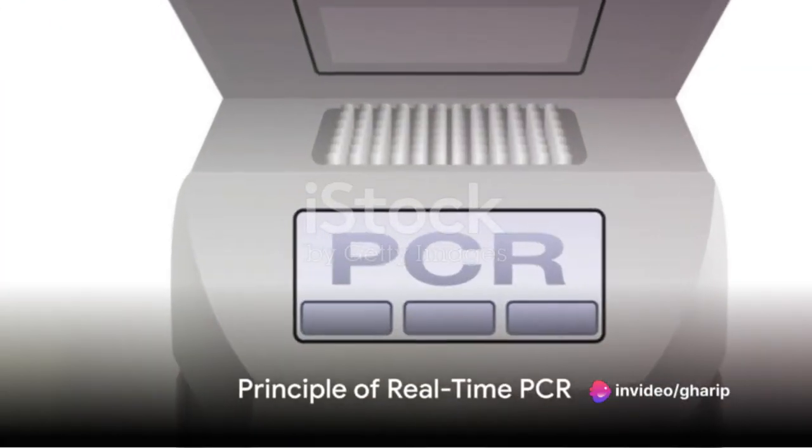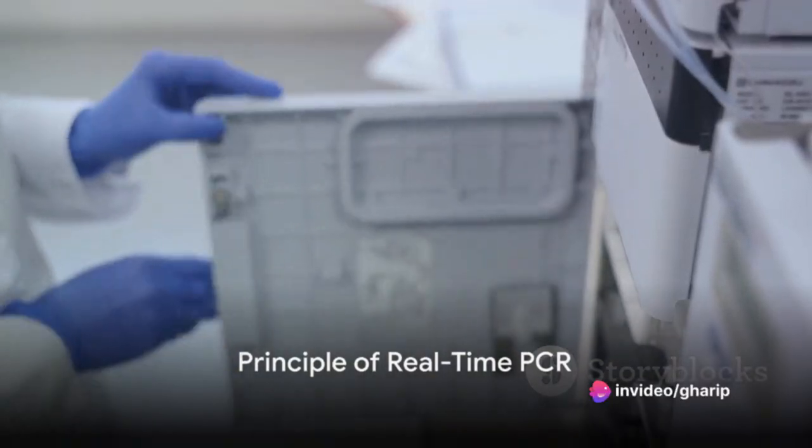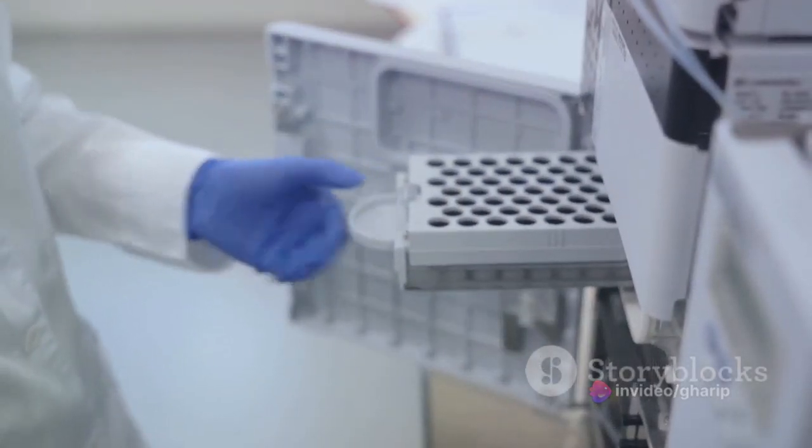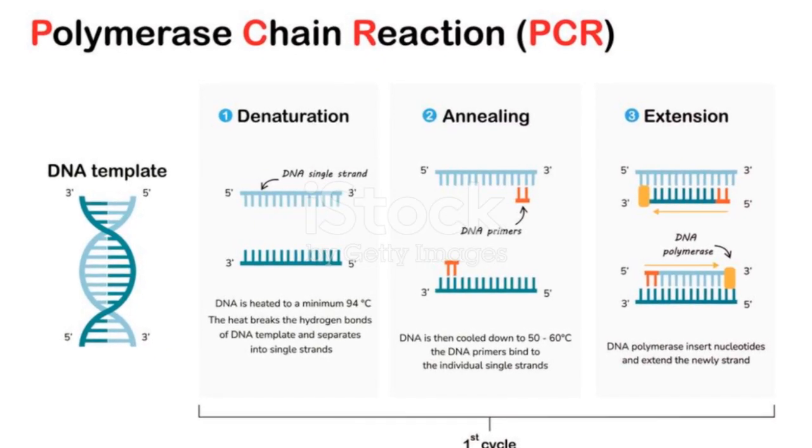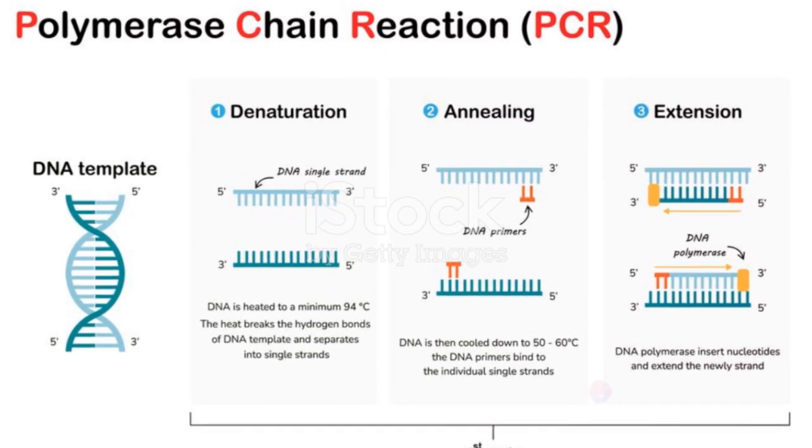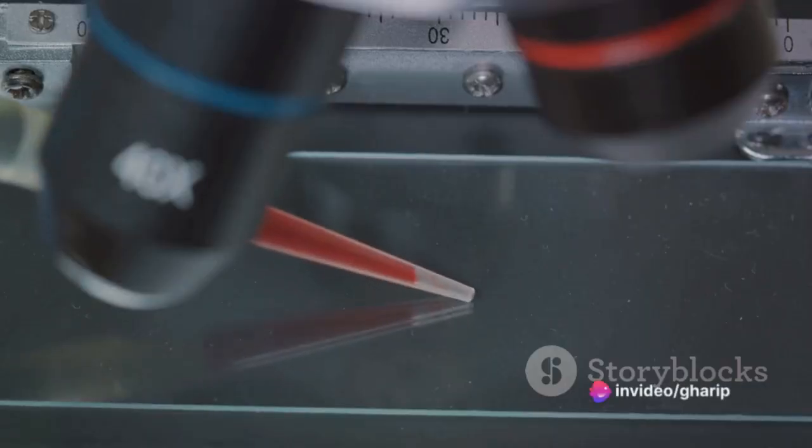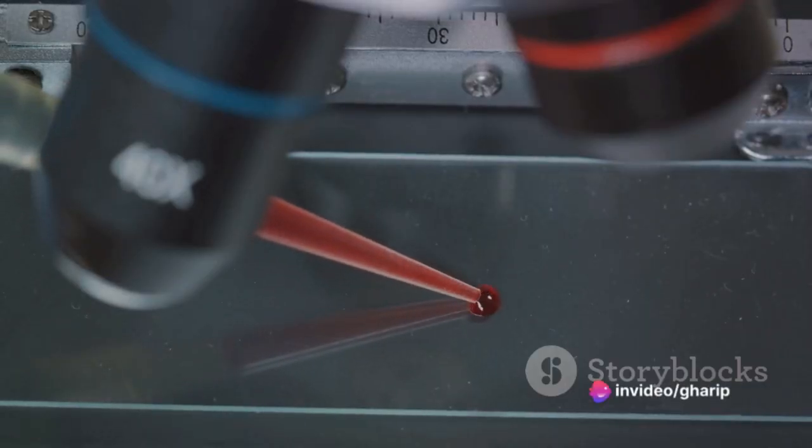Real-time PCR works on the principle of detecting and quantifying a fluorescent reporter, which increases proportionally with the amount of DNA. This is made possible by incorporating a fluorescent molecule in the reaction. As the DNA amplifies, the fluorescent signal increases.